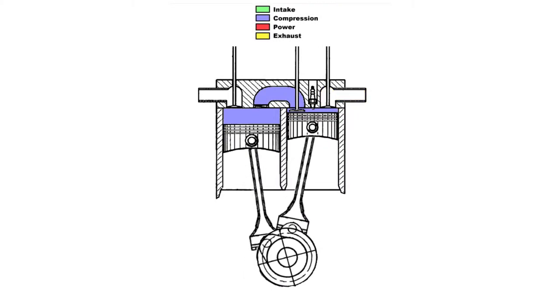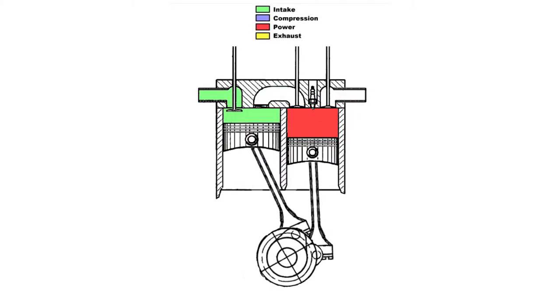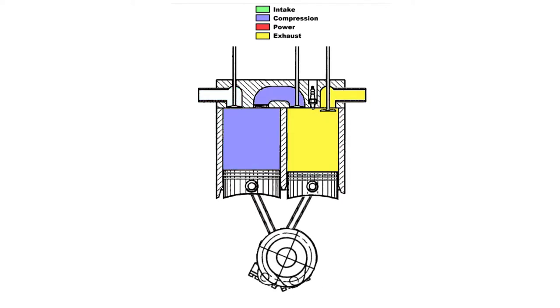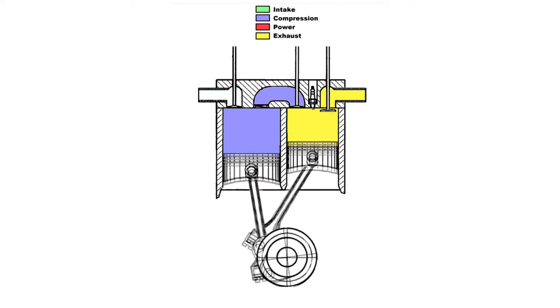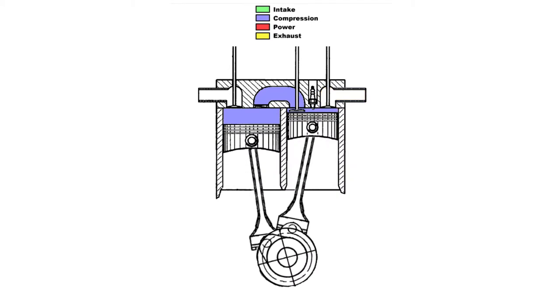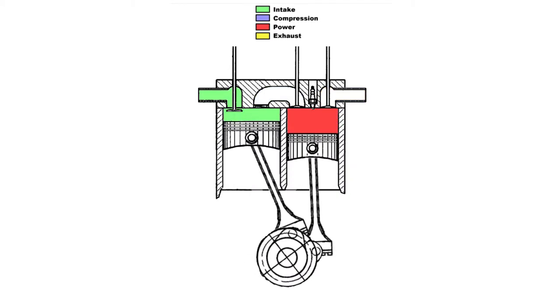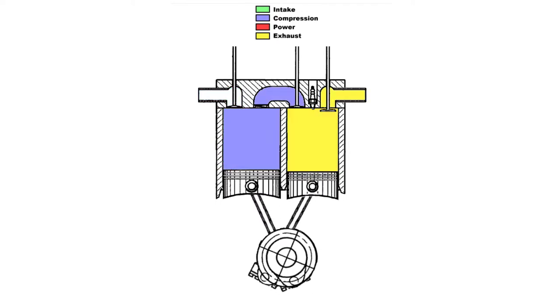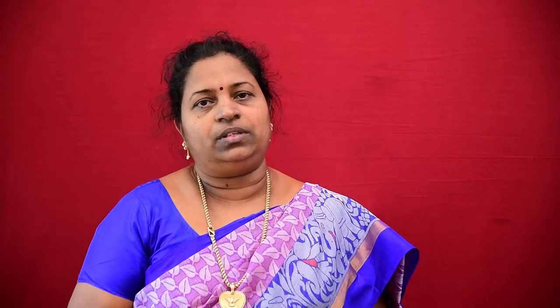Let us consider automobiles. In the case of automobiles, the fuel fed into the combustion chamber gets burned and this produces heat energy. This heat energy gets converted to mechanical energy and that pushes the vehicle in the forward direction. So this is the basis of thermodynamics, and there are three important laws of thermodynamics.